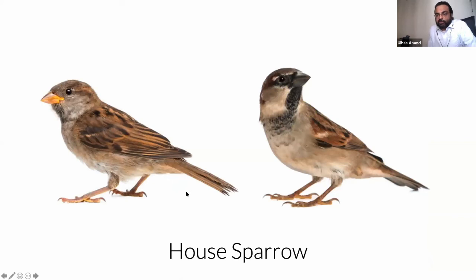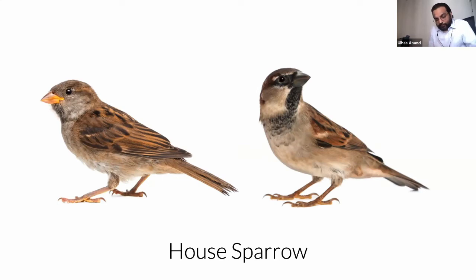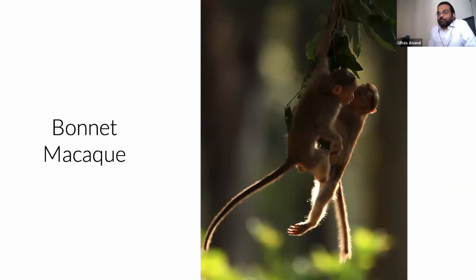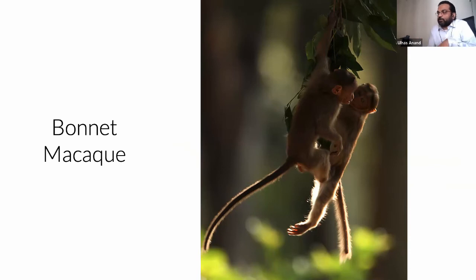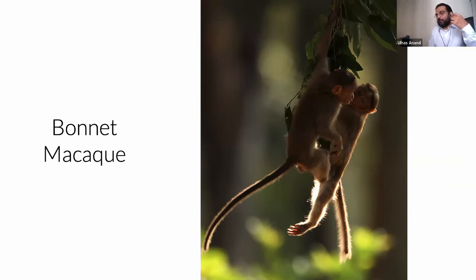The house sparrow, once very common in Bangalore, is now found only in pockets - particularly in older markets like KR Market, Shivajinagar, Johnson Market, and older areas like Malleswaram and parts of Indiranagar. The most common monkey in Bangalore is the bonnet macaque - named for the parting in their hair that looks like a bonnet. A troop of 20 visits the speaker's apartment daily. Many troops have been relocated outside the city, but they're still found around temples.